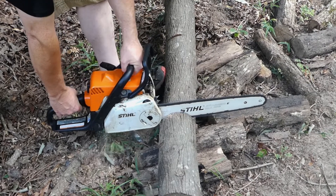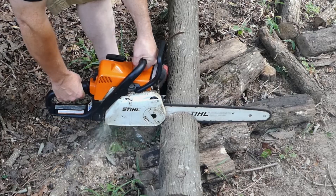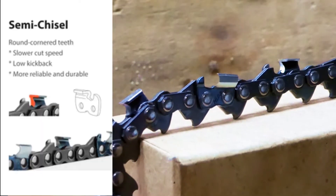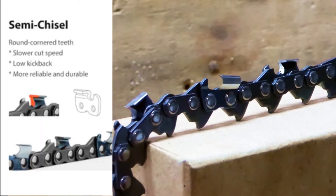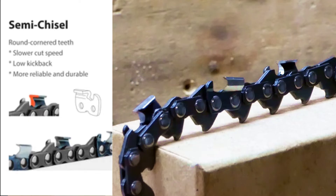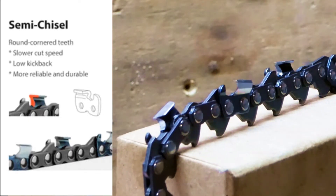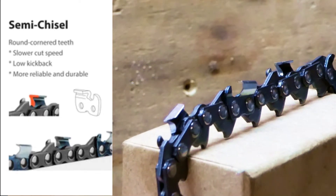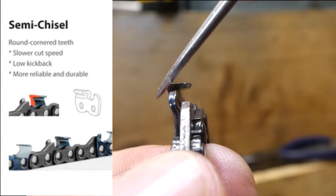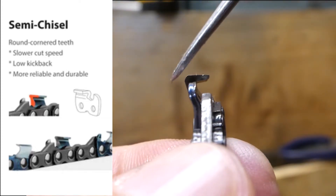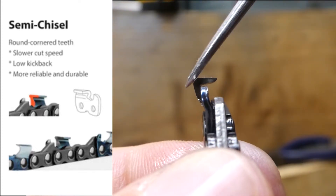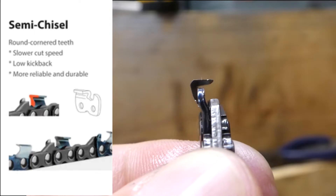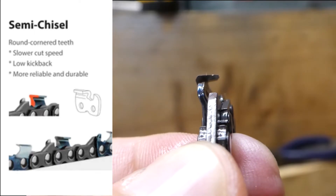Now that we have some understanding of the basics, let's look at the types of cutting teeth and how they can differ. The most common type of cutter that most homeowners will use is the semi-chisel. You can identify a semi-chisel cutter by the curved shoulder on the edge of the tooth. These are generally less aggressive than other types, they stay sharper longer, and they're easier to sharpen.